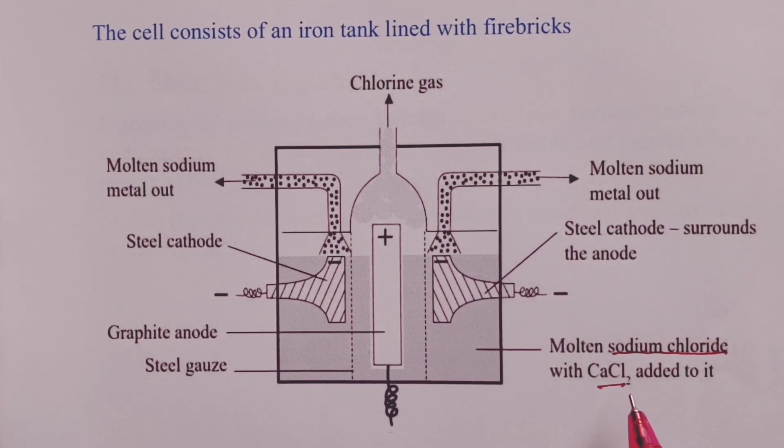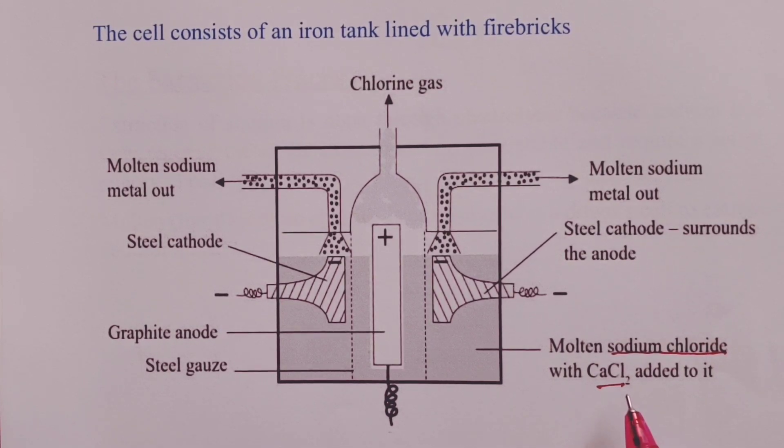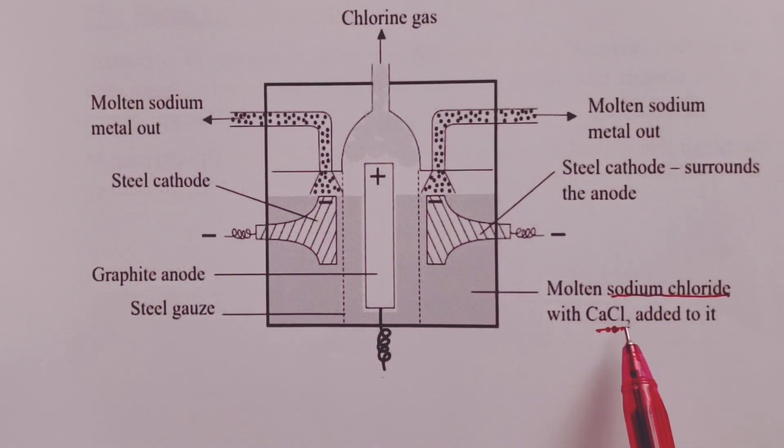Now to reduce the heating costs, calcium chloride is usually mixed with our molten ore, whose melting point is about 801 degrees Celsius. The mixing with calcium chloride reduces the melting point to about 600 degrees Celsius, because the melting point of the mixture is 600 degrees Celsius.